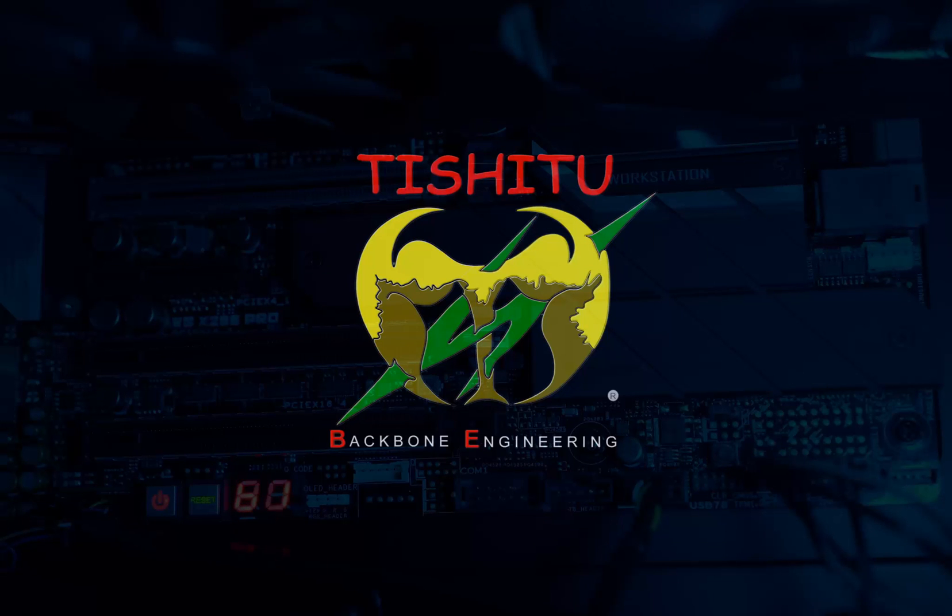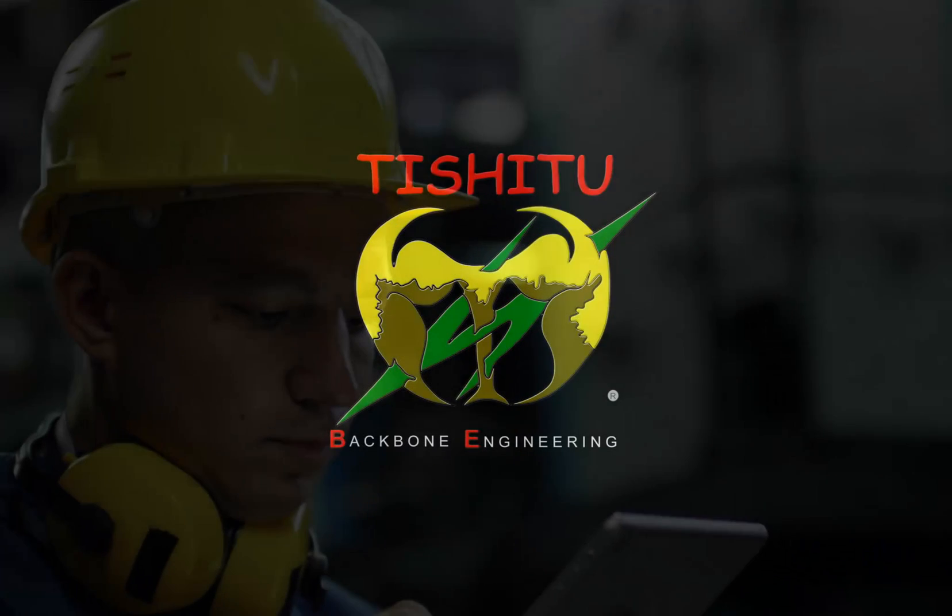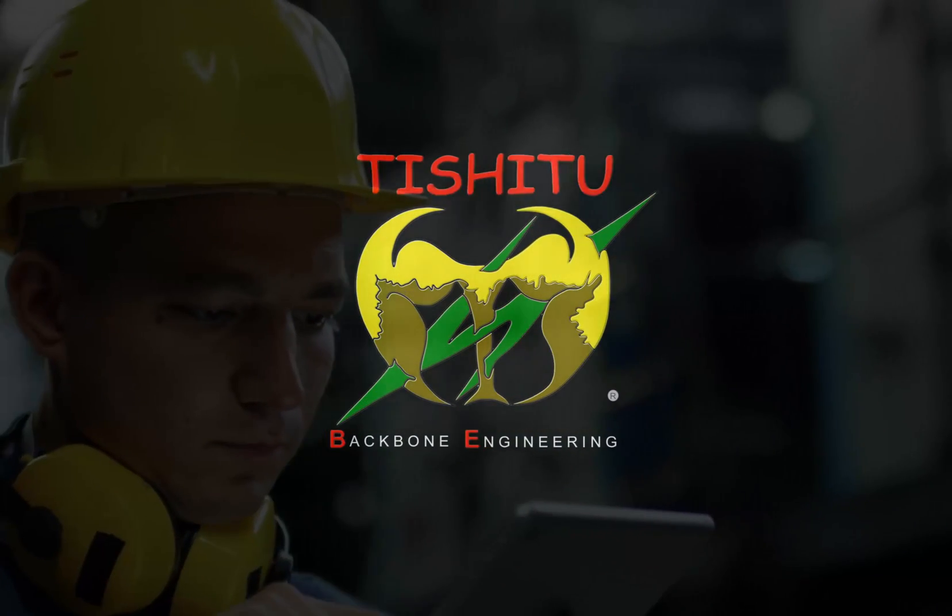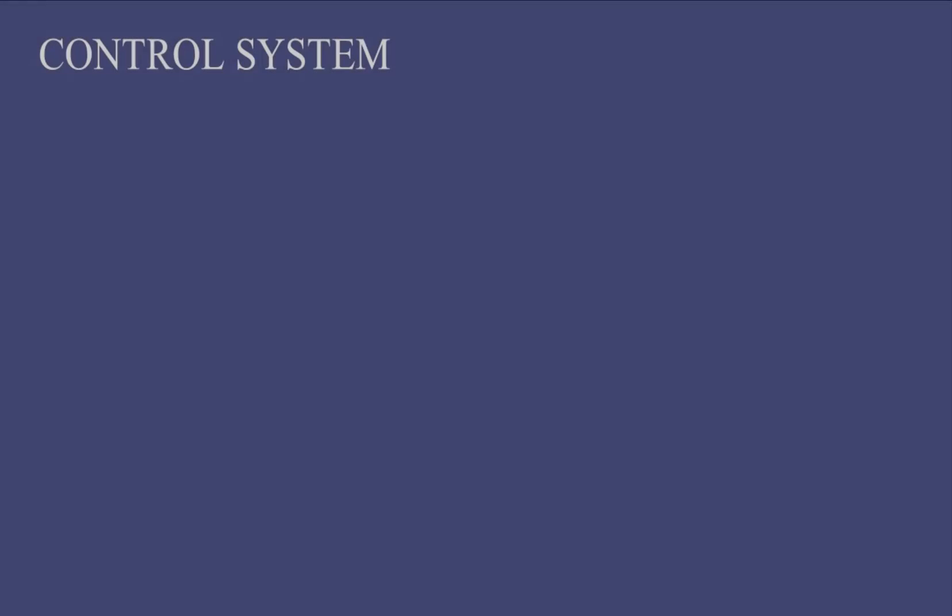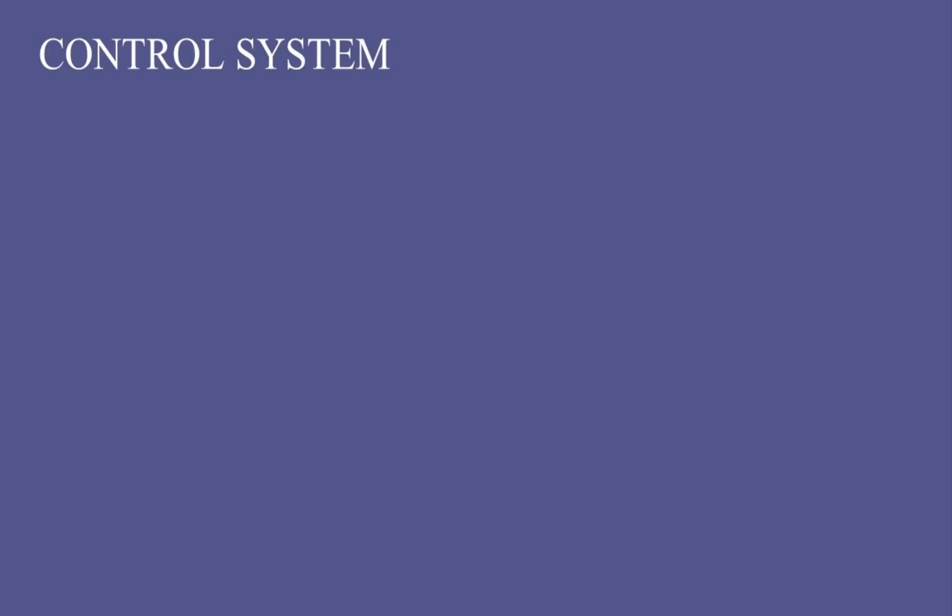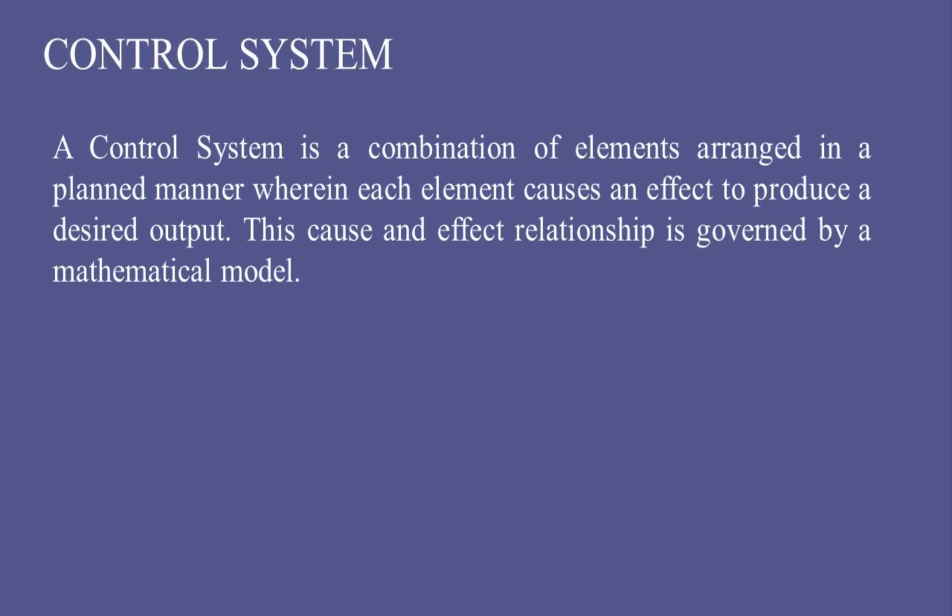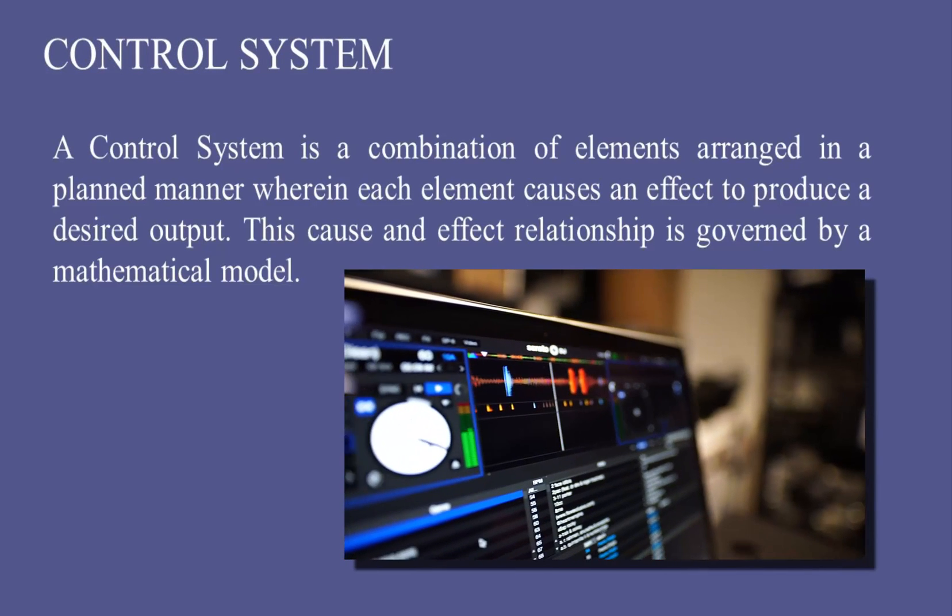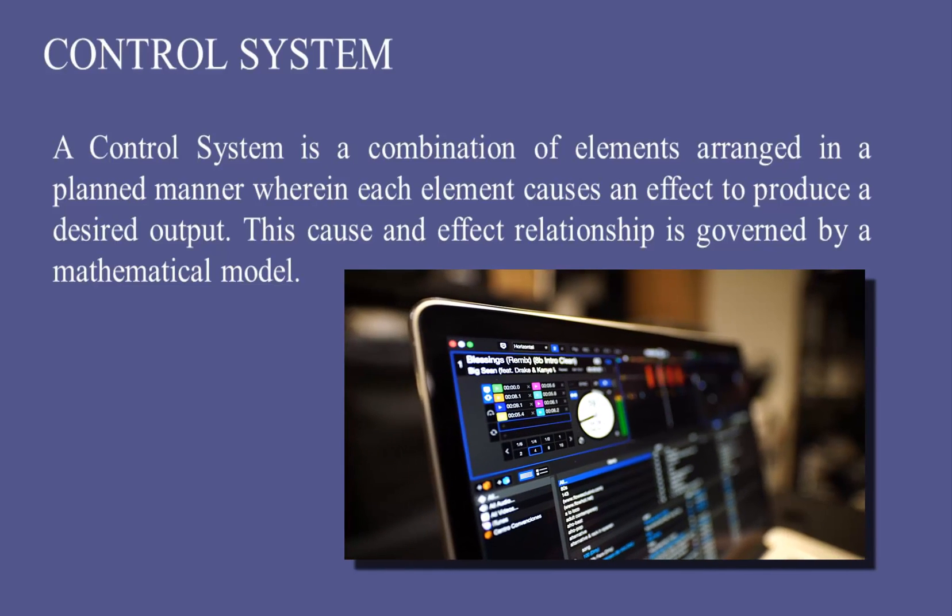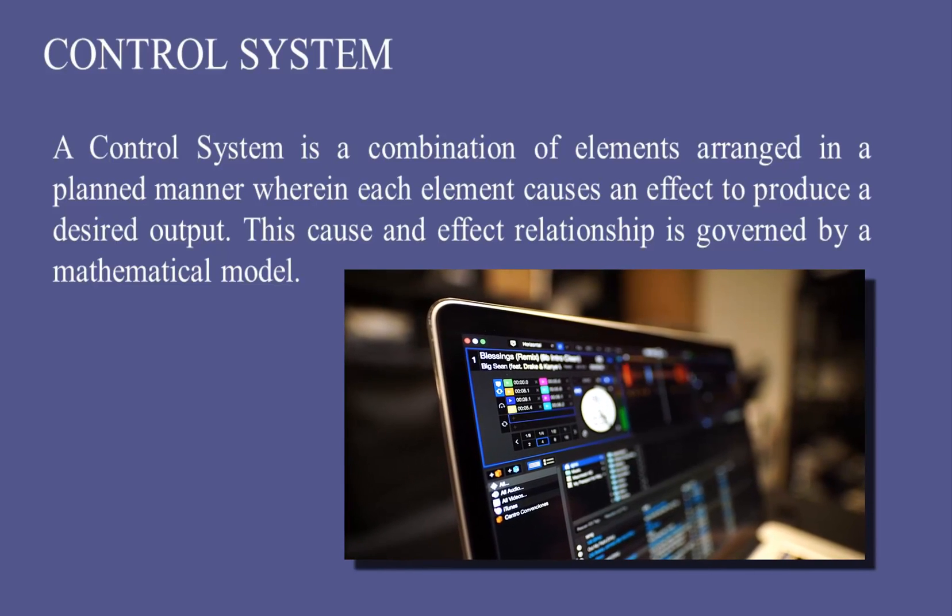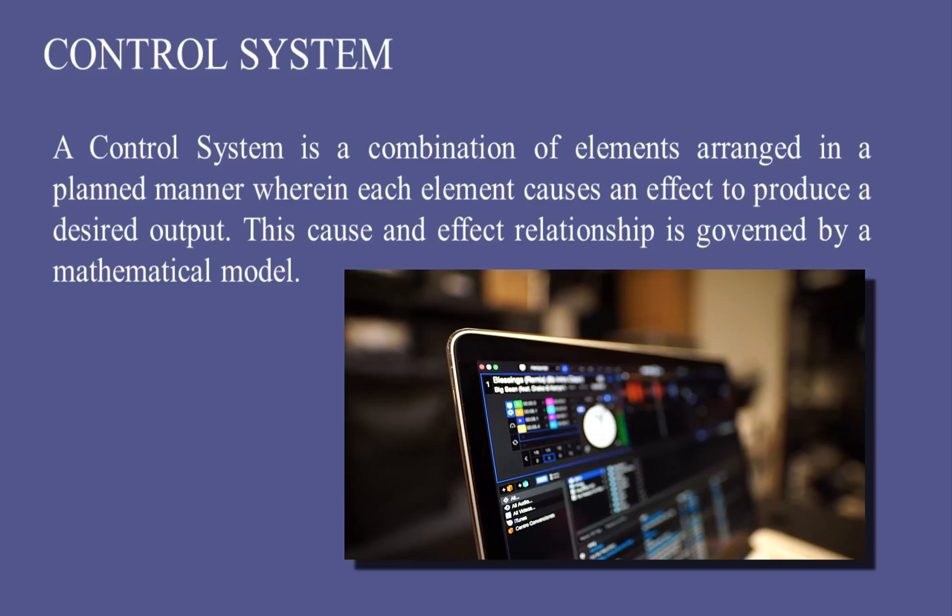Today we will discuss how to obtain a step response of a control system in MATLAB software and analyze it further. Let's start with a control system. A control system is a combination of elements arranged in a planned manner wherein each element causes an effect to produce the desired output. This cause and effect relationship is governed by a mathematical model.